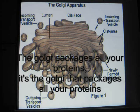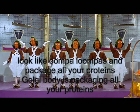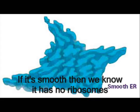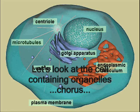The Golgi packages all your proteins — it's the Golgi that packages all your proteins. There's a place called the transport pathway of the cell: endoplasmic reticulum, we know so well. If it's rough, then we know it has those ribosomes; if it's smooth, then we know it has no ribosomes.